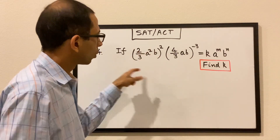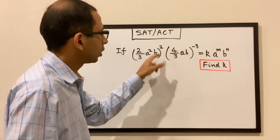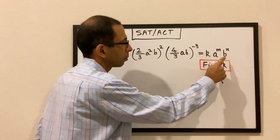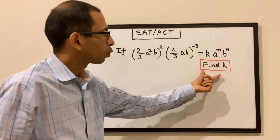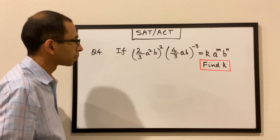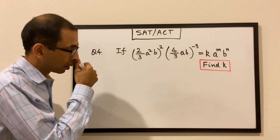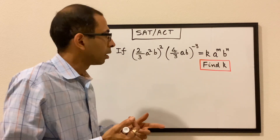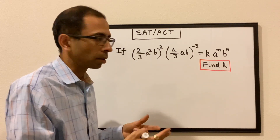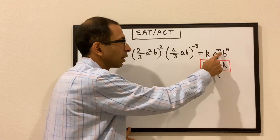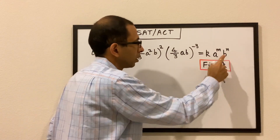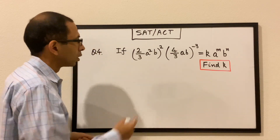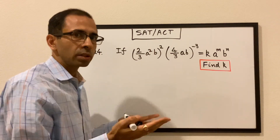Next question: (2/3 · a²b)² times (4/3 · ab)^(−3) equals k · a^m · b^n. We have to find the value of k. The important catch is that we only need to find the constant term k — we're not asked for the powers m and n. So we concentrate only on the constant terms when simplifying the left side.